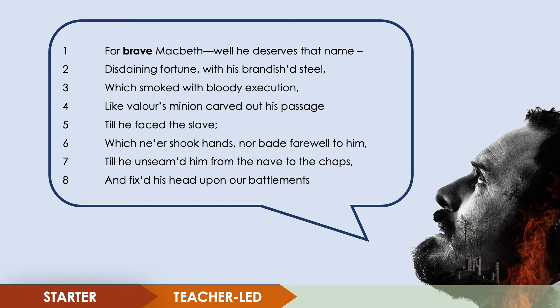Line six: 'Which never shook hands nor bade farewell to him' — showing that Macdonwald didn't have time to do anything. Line seven: 'Unseamed him from the nave to the chops' — a graphic description explaining how Macbeth chopped Macdonwald in half from the navel or belly to the chops, meaning the cheeks. This demonstrates how physically powerful Macbeth is, but also how ruthless. Line eight: 'And fixed his head upon the battlements.' Macbeth fixed Macdonwald's head to the top of a castle wall, symbolising his power and warning everyone else what will happen if they rebel against the king.